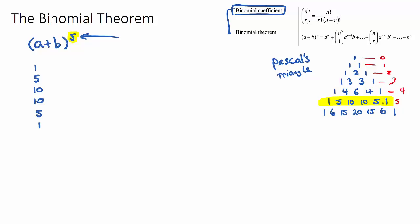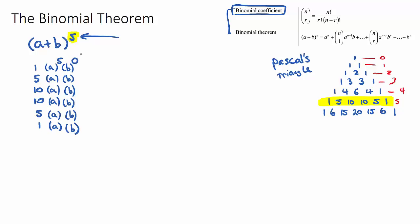Next we have our two terms of our binomial, a and b, and we write them in each row. Then we give these two terms powers in each row. We take the first term, a, and in our first row give it the maximum power of five. The powers in each row need to add up to five, so b gets a power of zero. We then go down by one each time: a to the four with b to the one, a to the three with b to the two, a to the two with b to the three, a to the one with b to the four, and finally a to the zero with b to the five.